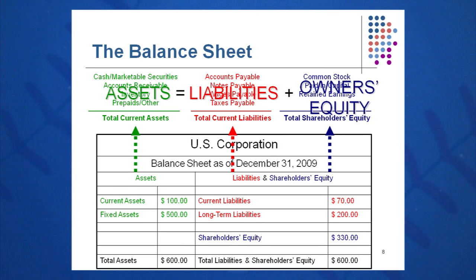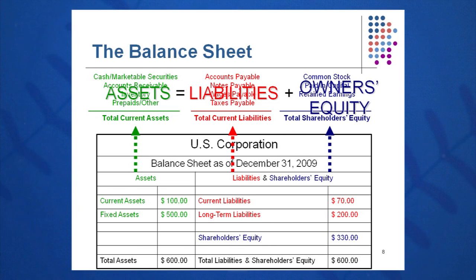On the right side, you'll see the same thing in the current category under liabilities. Current liabilities are things you owe within one year — things that must be paid within one year — including accounts payable, notes payable, interest payable, taxes payable, and wages payable. Some definitions might slightly adjust that timeframe, but in general these items are due within one year.